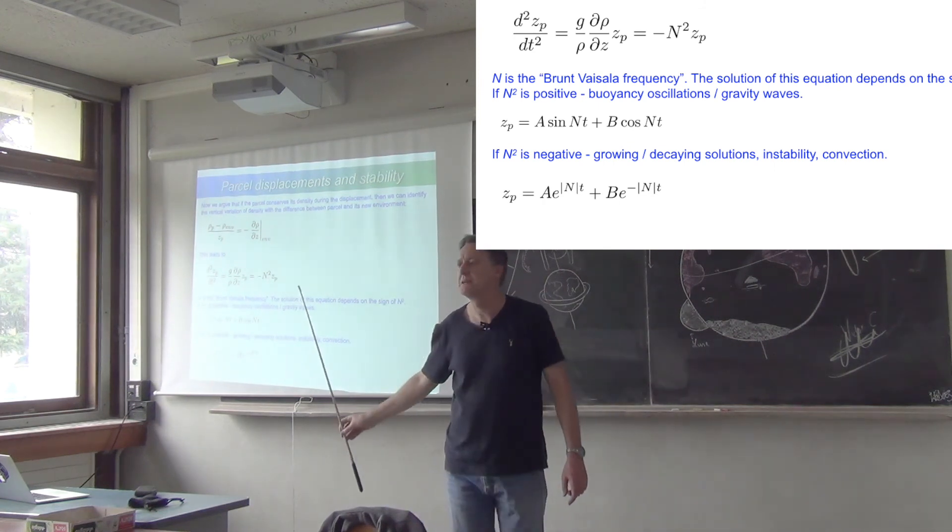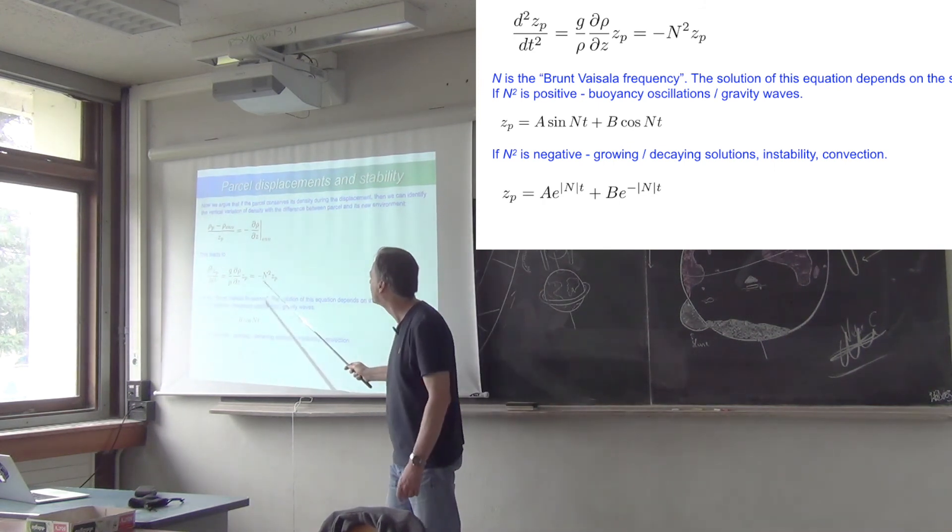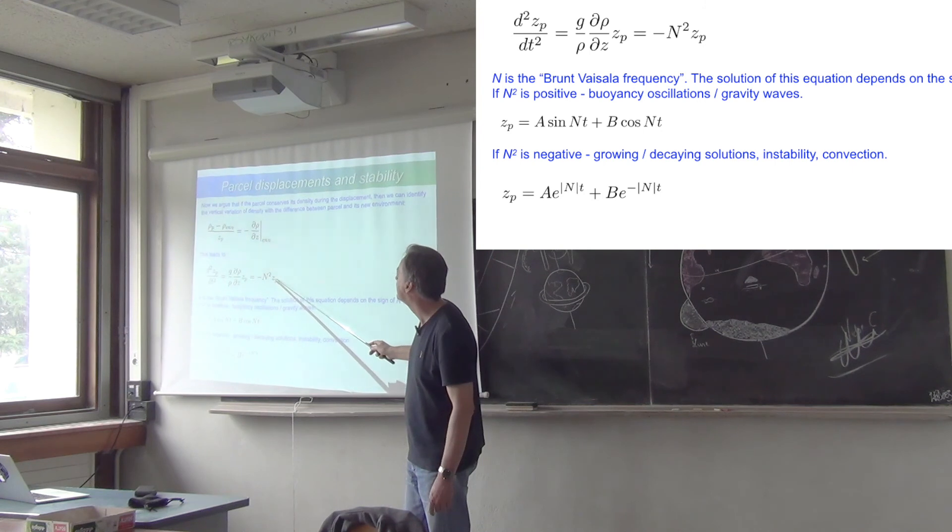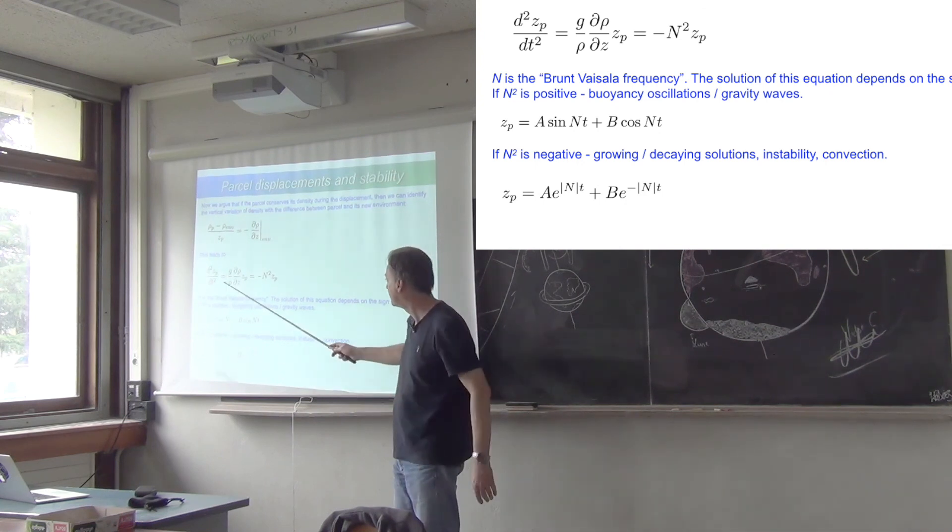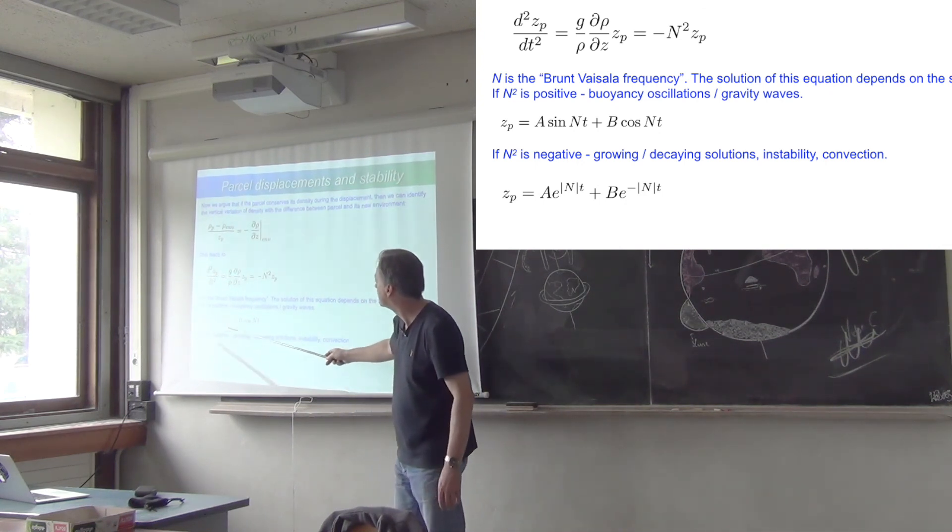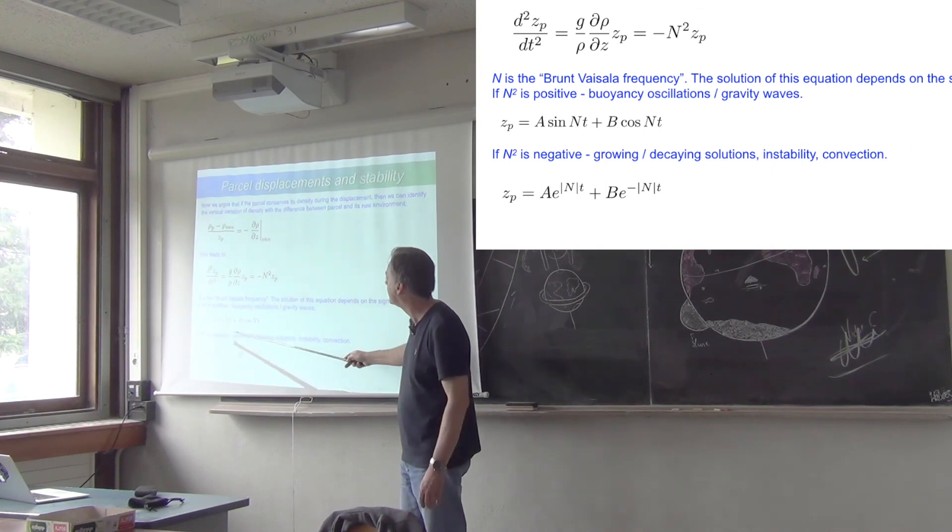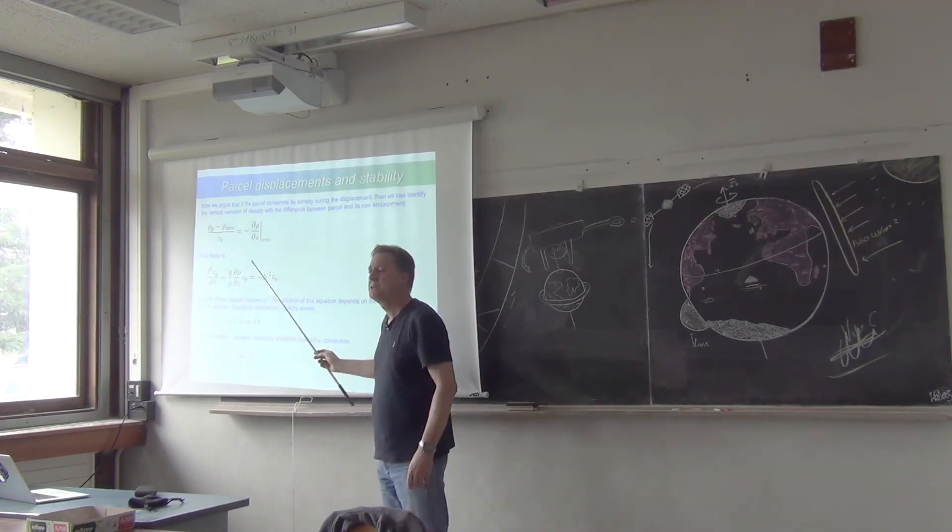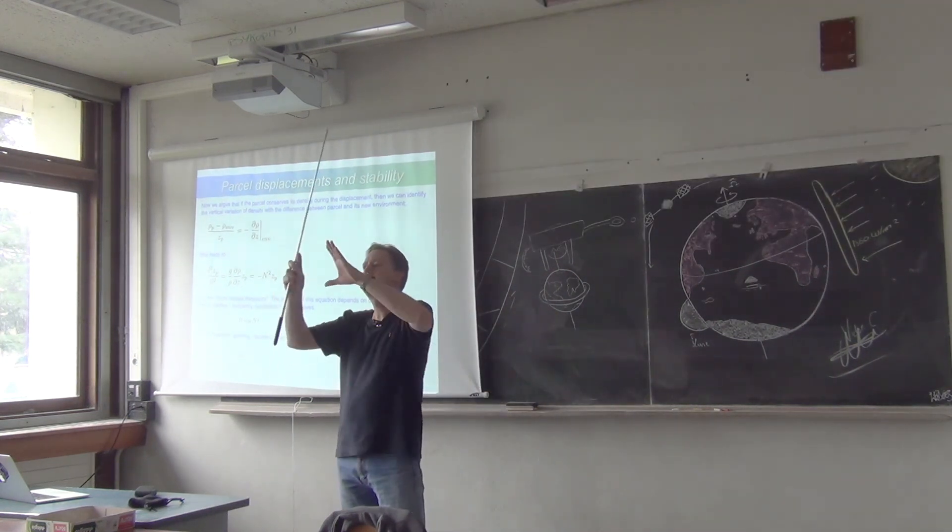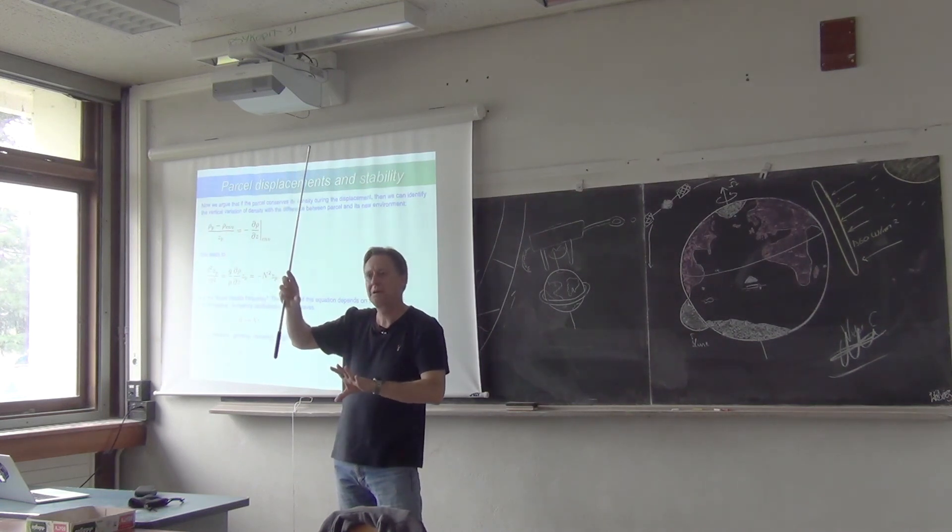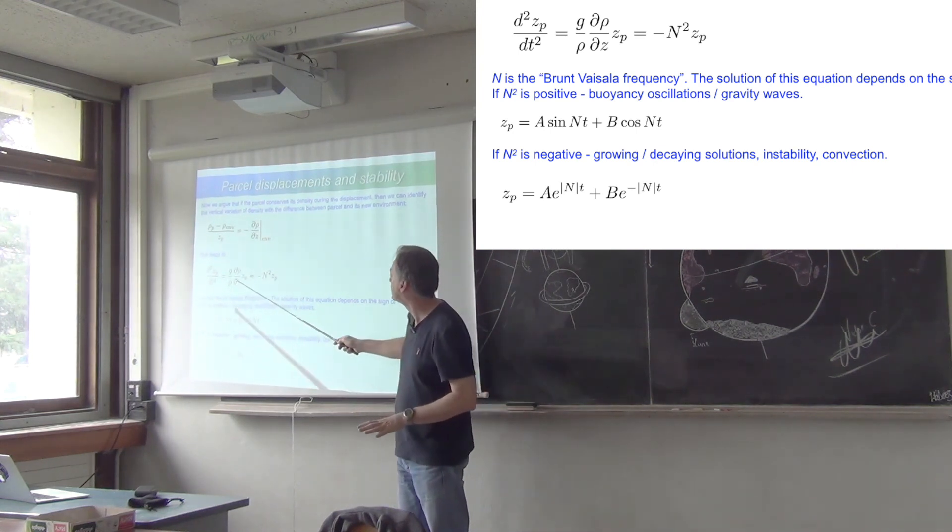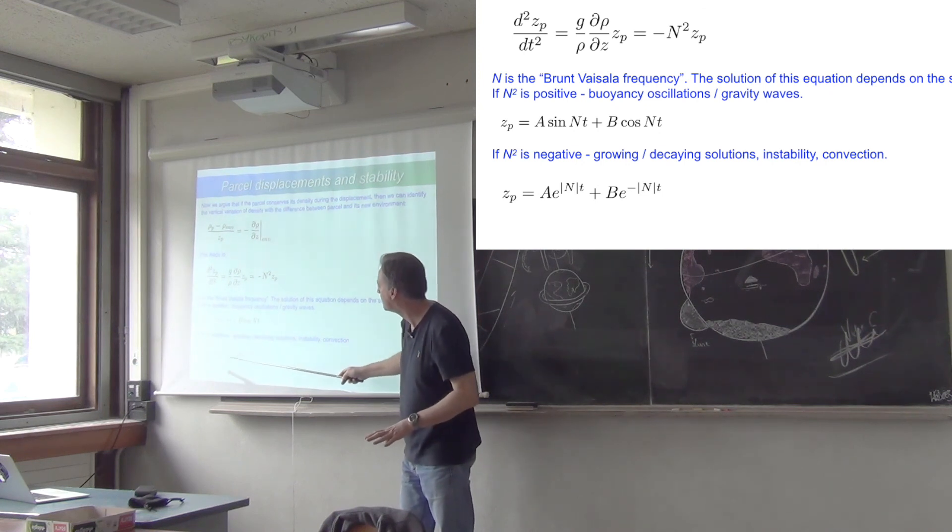N is an oscillation frequency—that's a harmonic motion equation. If N² is positive then you'll have oscillations. The solution of this equation is that the position of the parcel is sine and cosine functions of N times t. Imagine if the fluid had a greater density above and a lesser density below. What would happen then? N² would be negative, which means N is imaginary, and the solutions to this equation are not trigonometric but exponential.